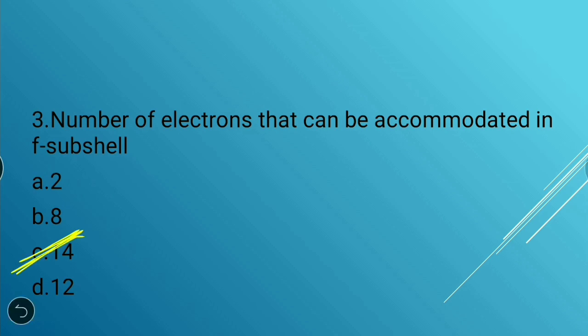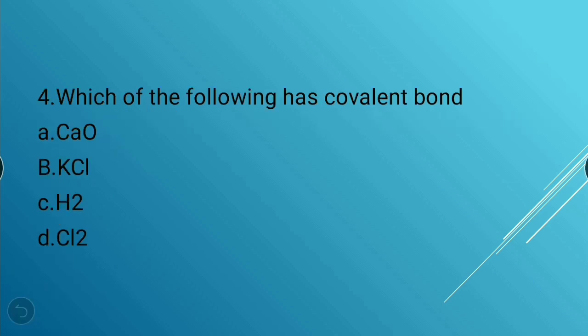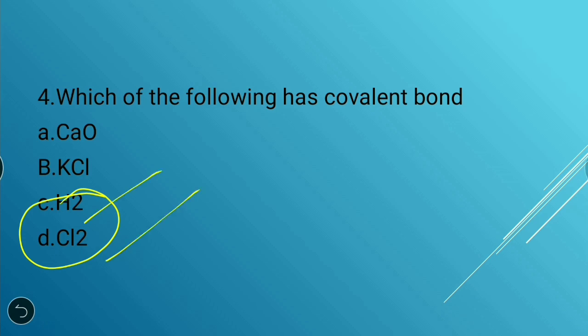Next question: Which of the following has a covalent bond? Options: CaO, KCl, H₂, or Cl₂. Both H₂ and Cl₂ are correct — there was an option mistake, so H₂ and Cl₂ are the correct answers.